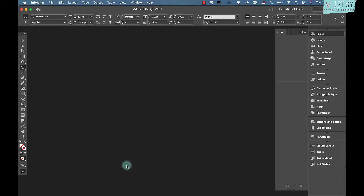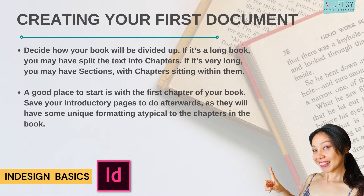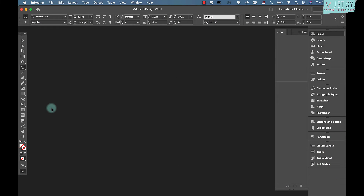Next, decide how your book will be divided up. If it's a long book, you may split the text into chapters; if it's very long, you may have sections with chapters within them. Your first task is to create a document which will feature the formatting styles you'll be using across the whole book.